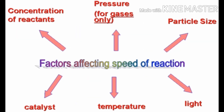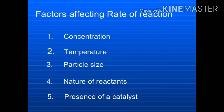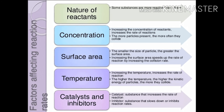The second factor which affects the rate of chemical reaction is size of the particle of reactant: smaller the size of reactant, higher is the rate of reaction. The third factor which affects the rate of reaction is concentration of the reactant. Higher the concentration of the reactant, higher is the rate of reaction. That means concentrated acid reacts faster than dilute acid.